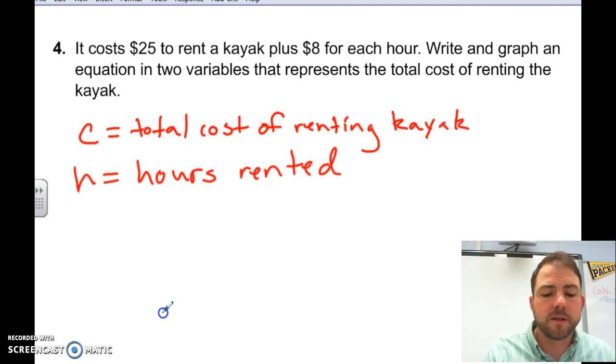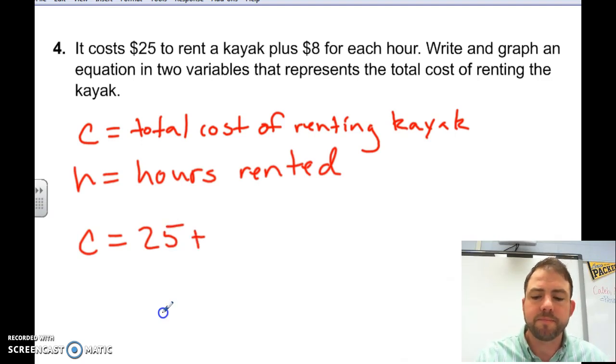So, to build this equation, we know that C is going to equal how much it costs to rent the kayak. And we know that for sure, in the first part of this problem, it says it costs $25 to rent a kayak. So, we know it's $25 plus, we now have $8 per hour. So, we know that we don't know how many hours we rent the kayak. We're going to say it's $8 times how many hours. And there's our equation in two variables.